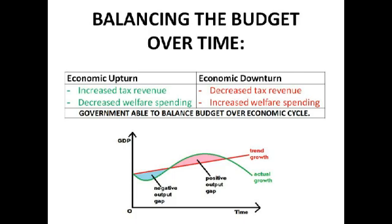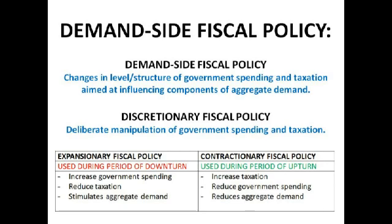Demand-side fiscal policy — probably the one you're more familiar with from GCSE — is essentially changes in the level and structure of government spending and taxation aimed at influencing the components of aggregate demand. We've also got discretionary fiscal policy, which is deliberate manipulation of government spending and taxation. This gives us expansionary fiscal policy, used during periods of economic downturn with increased government spending and reduced taxation to stimulate aggregate demand, and contractionary fiscal policy, used during periods of upturn with increased taxation and reduced spending to reduce aggregate demand and inflationary pressure.